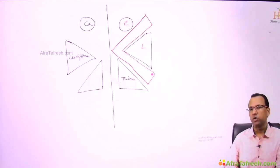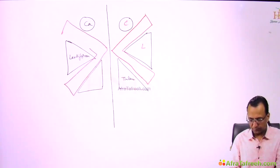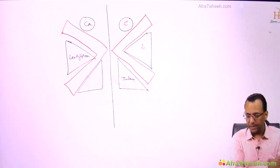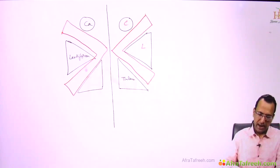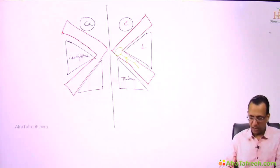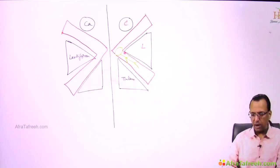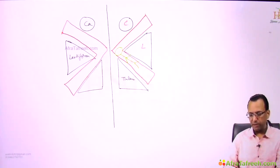The posterior limb is sandwiched between the lentiform laterally and the thalamus medially. Drawing the internal capsule on both sides gives a superior view of both the right-sided and left-sided internal capsule. The human body is represented on the internal capsule: the sensory motor fibers of the head pass through the genu, while upper limb, lower limb, and trunk fibers pass through the posterior limb.